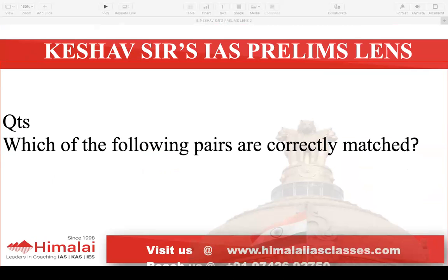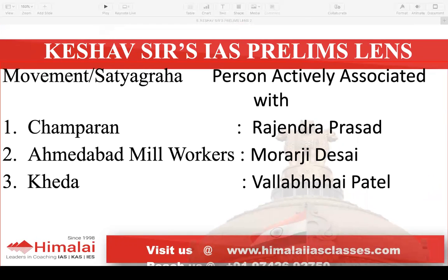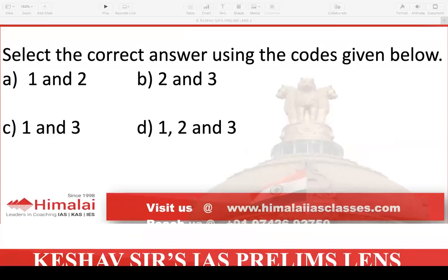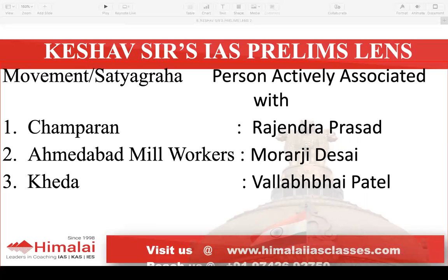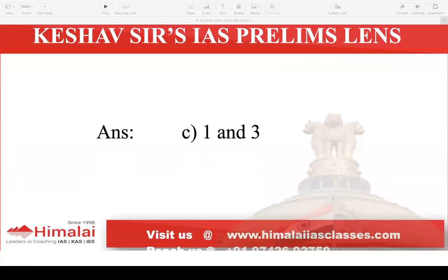Next question: Which of the following pairs are correctly matched — movement with the person actively associated with it? A. Champaran Satyagraha – Rajendra Prasad. The third option is Kheda Satyagraha – Vallabhbhai Patel. Both the first and third options are correct. Rajendra Prasad took part in Champaran Satyagraha, and Vallabhbhai Patel took part in Kheda Satyagraha. For Ahmedabad mill workers, Anasuya Bhai was part of it. Mahatma Gandhi was in Champaran Satyagraha as his first CDM, and his first hunger strike was at Ahmedabad mill workers. So the answer is option C.